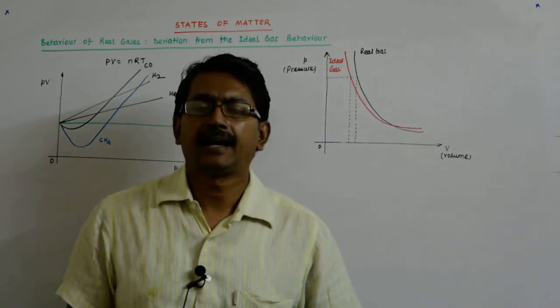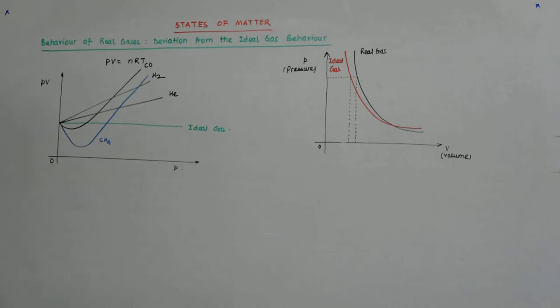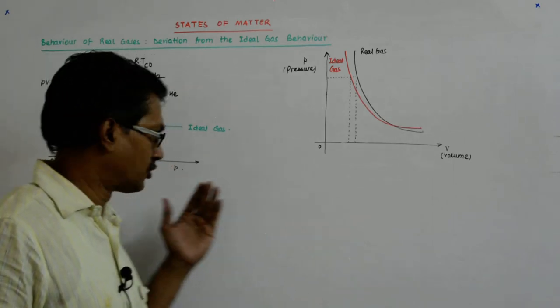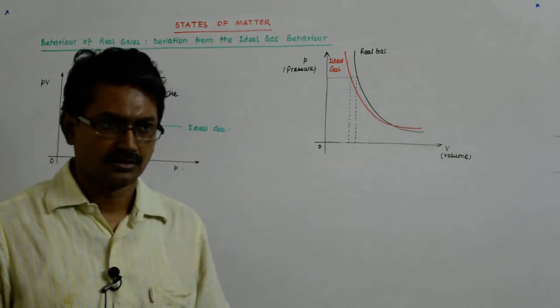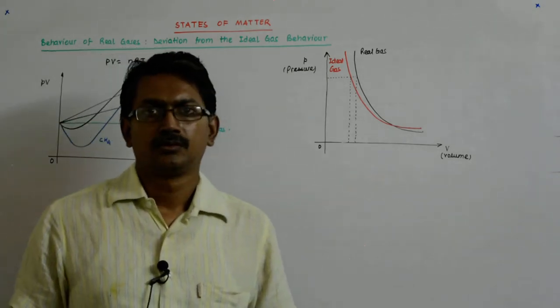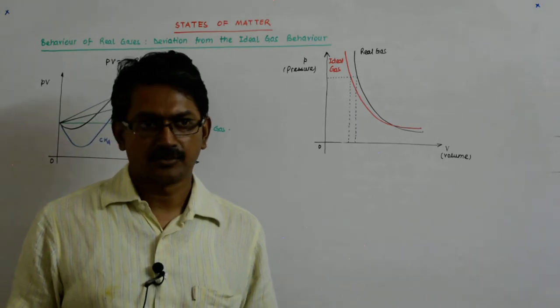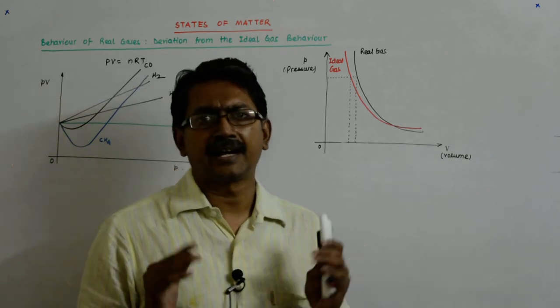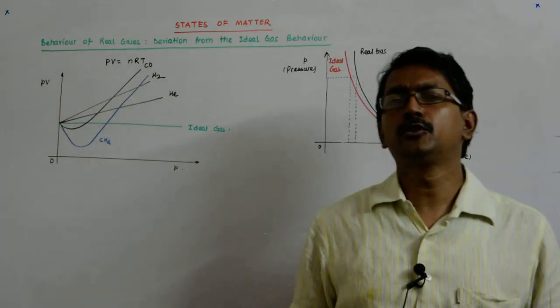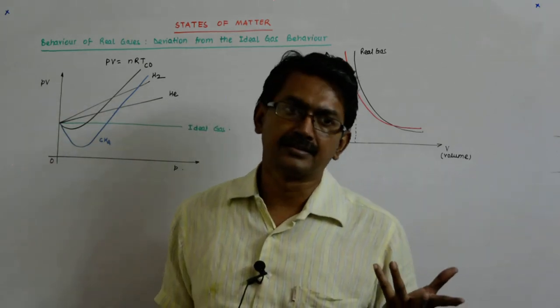So we saw that the gases deviate from their ideal behavior, both in this and here. That is the experimental observation. Now, what is the reason behind it? That should be our next question.